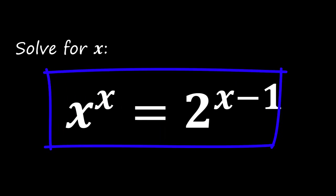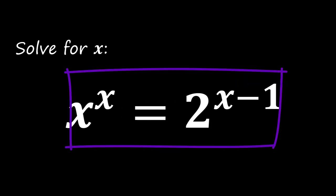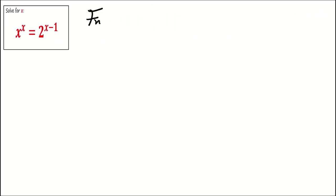When you're ready, feel free to share your answers in the comments, then we'll explore the solution together. Let's get started. Given the condition x to power x equals 2 to power x minus 1, which equals 2 to power x times 2 to power negative 1.